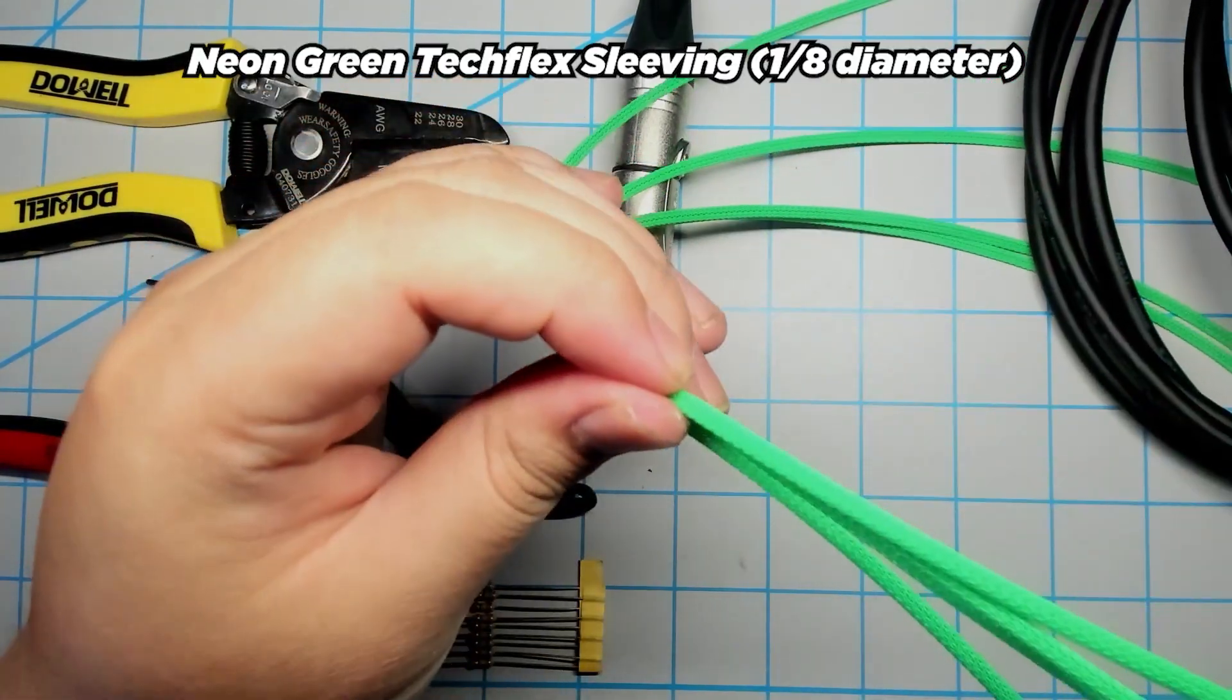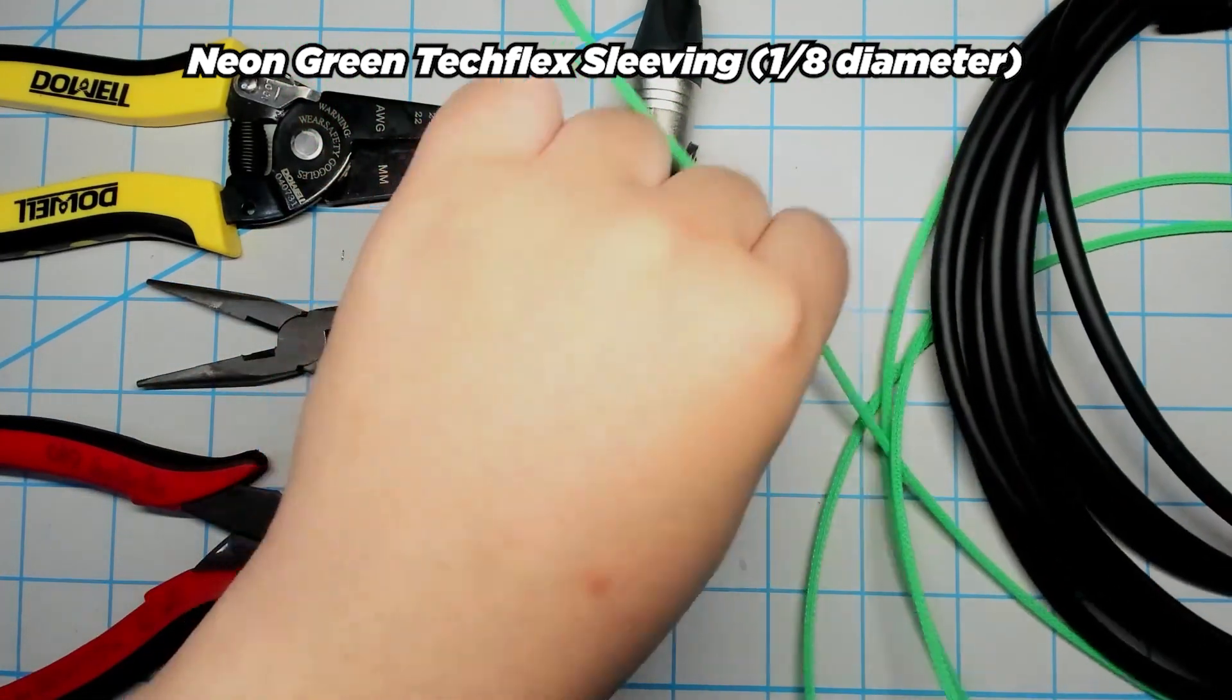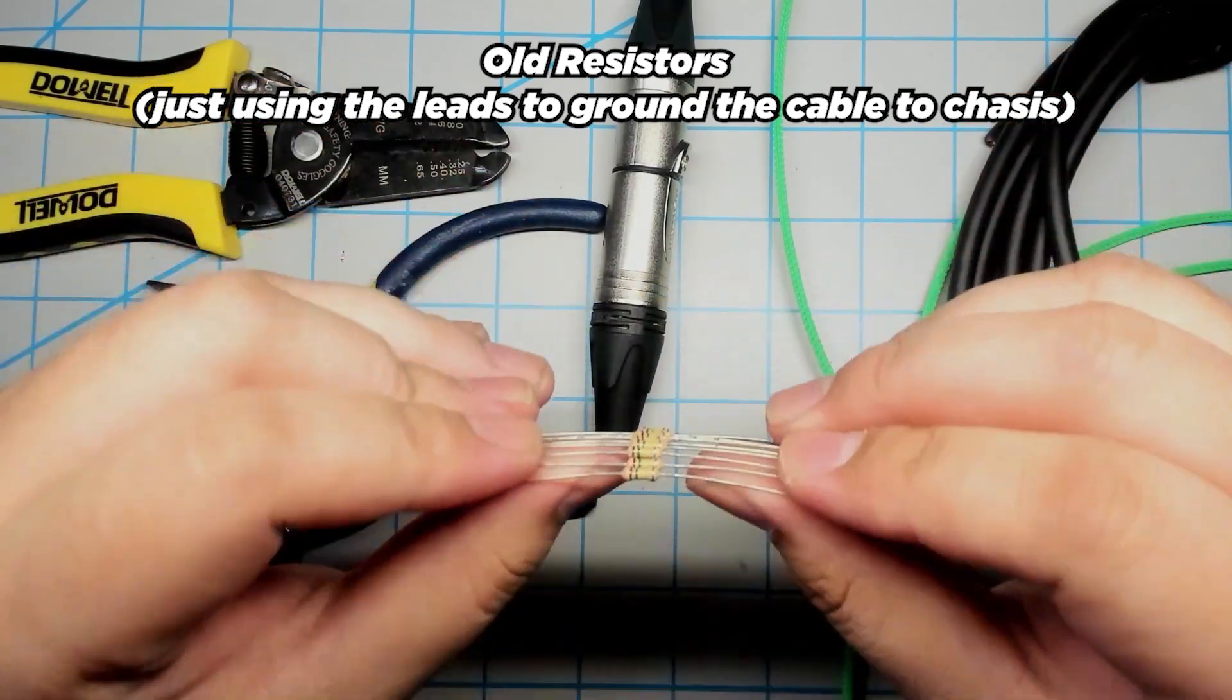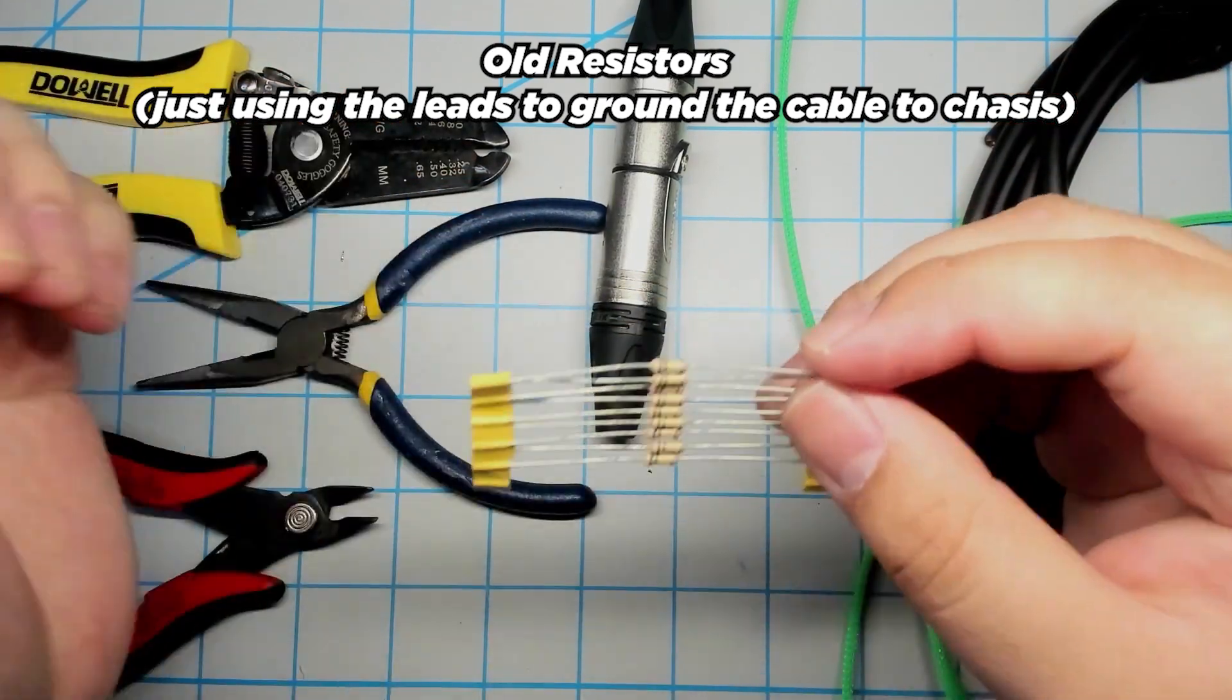I've got about nine feet of neon green tech flex sleeving that I also commonly use for custom USB cables. Lastly I'm using some old resistors from scrap projects where I'll just be using the leads for the ground connection.